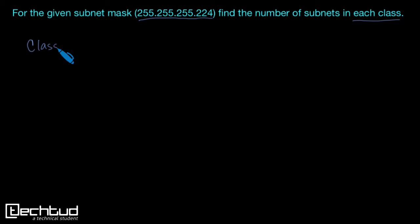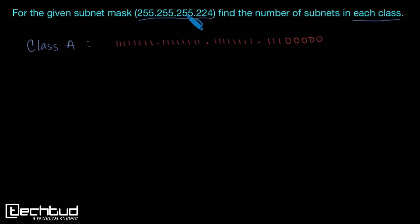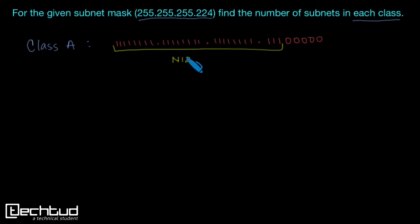Starting from Class A: if we write this subnet mask in binary it will be 11111111.11111111.11100000.00000000. Now we know that all the ones represent NID plus SID, and the zeros represent HID (host ID).